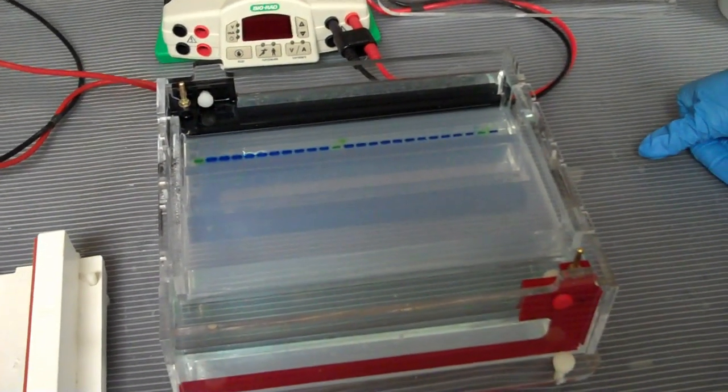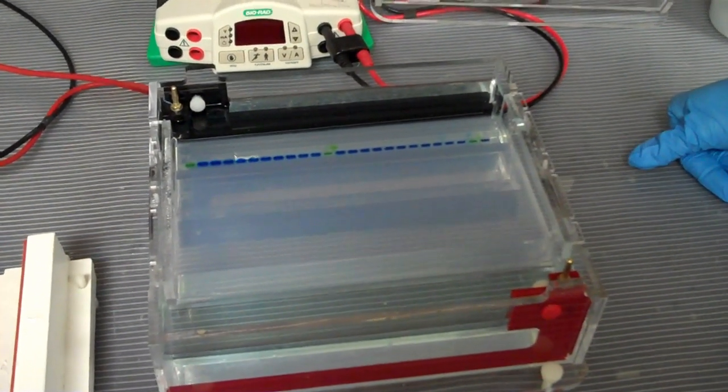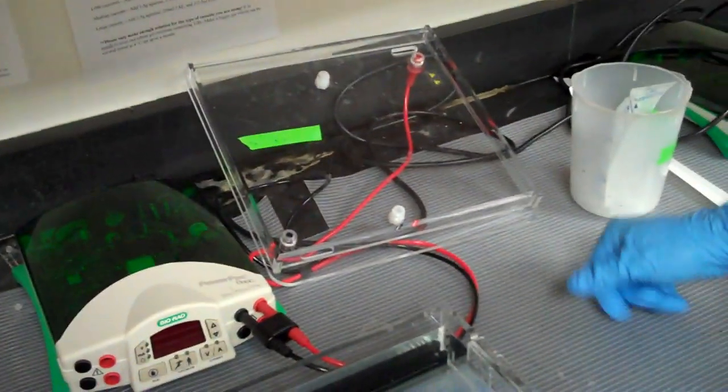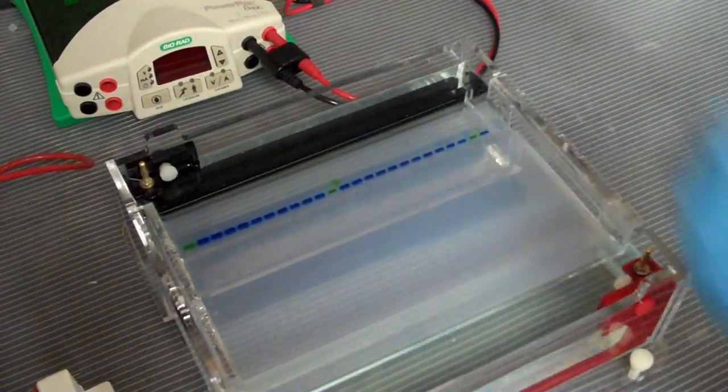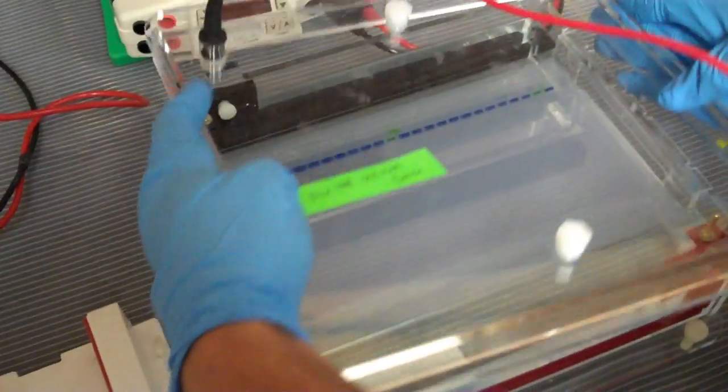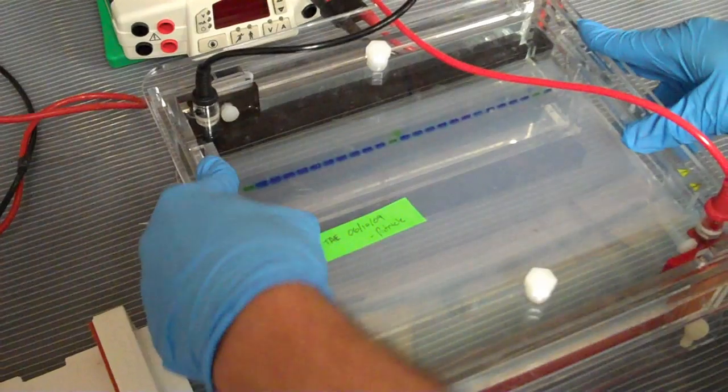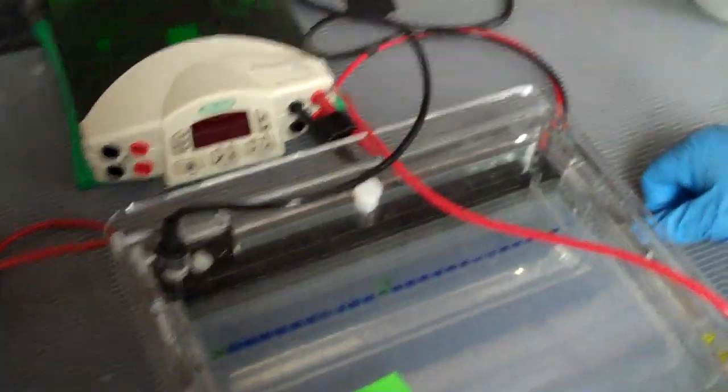Put the lid on top of the machine. Make sure the lid is plugged into the green Bio-Rad machine and turn it on.